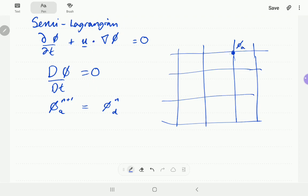and there's been a wind like this, and so it's come from, this is the departure point. This is where it was at the previous time step. And if you have no sources and sinks, then phi at the arrival time is just equal to phi at the departure point.